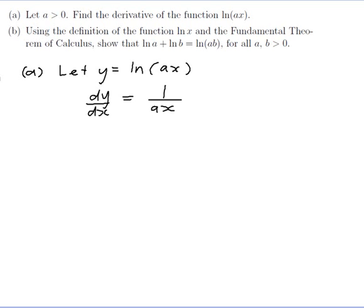The chain rule says I should multiply by the derivative of what's inside my function, so I need to multiply by the derivative of Ax, and the derivative of Ax would be a, because that's the constant next to x. And so it looks like my two a's cancel, and I get just 1 on x, which interestingly is actually the same as the derivative of just ln(x).